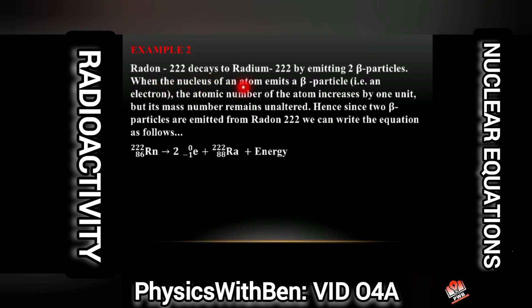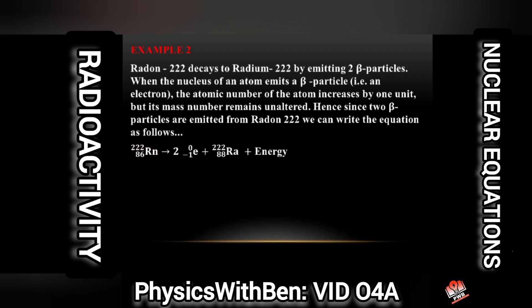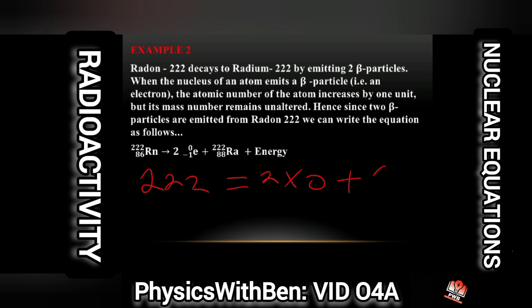Example number 2 follows the same approach and gives us a known result. Here, two beta particles were emitted. To balance it: 222 is the left-hand side of the equation and the right-hand side must match. We write that 222 equals 2 times 0 plus 222, and that is balanced.